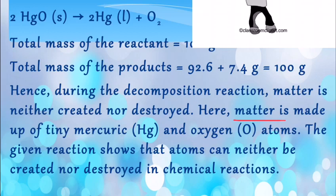So matter is made up of tiny mercuric oxide and oxygen atoms, and the given reaction shows that atoms can neither be created nor destroyed in a chemical reaction. So mass is conserved in a chemical reaction. On both sides of the reaction, the mass is 100 grams, meaning the reaction is following the law of conservation of mass.